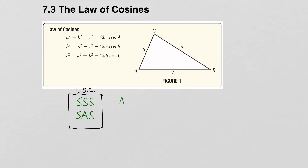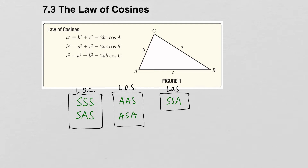Just to review: when we're given angle-angle-side or angle-side-angle, we can use the law of sines to solve. The ambiguous case is side-side-angle, and for this we also use the law of sines, but we have to remember that this is the ambiguous case. In this section, we're going to focus on the law of cosines, which deals with solving a triangle when given three sides or when given two sides and the included angle.